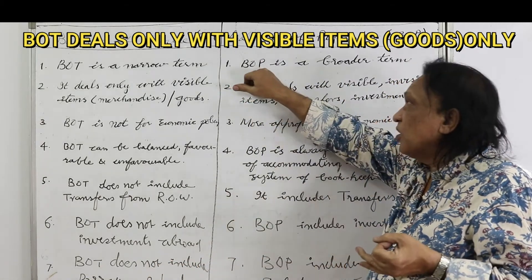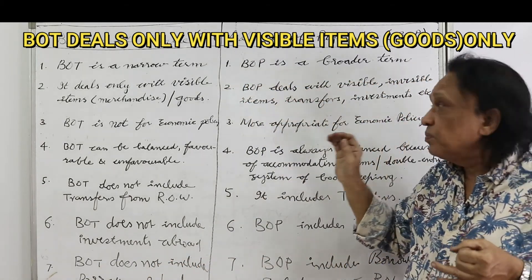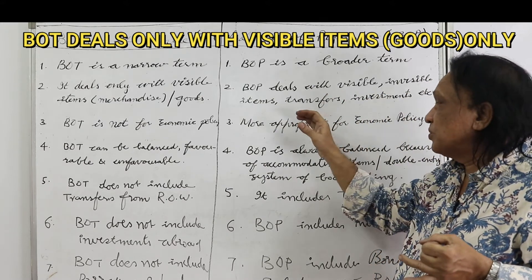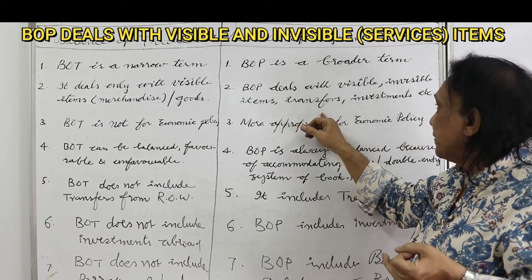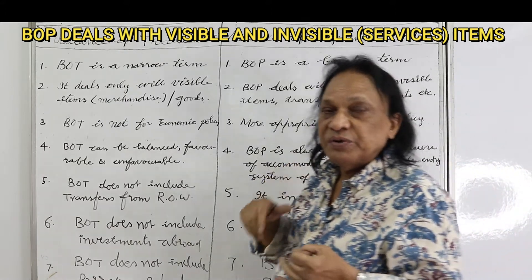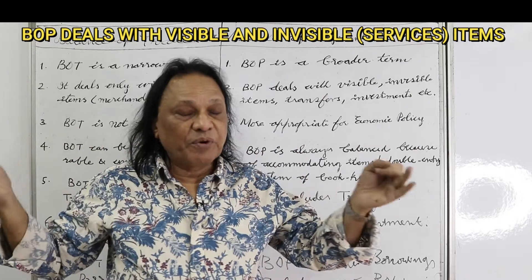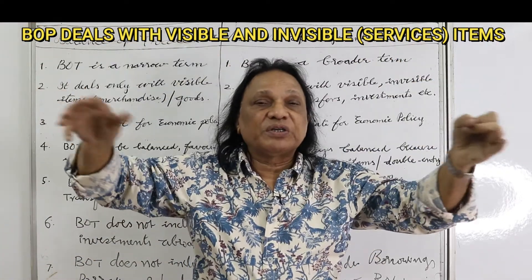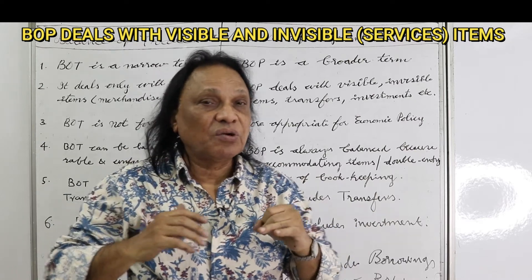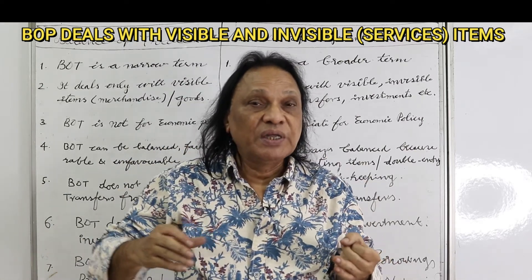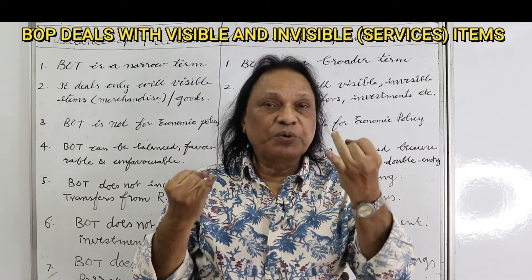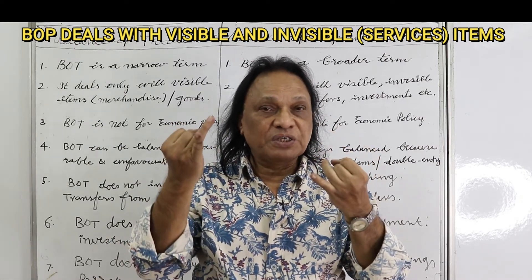BOT is a narrow term because it deals only with the exports and imports of only visible items, visible transactions, goods. And why do we call BOP a broader term? Because BOP deals with visible items, invisible items, transfer payments, investments, and more. Balance of payment is a broader term because it includes all economic transactions a country has with the rest of the world — it can be in terms of exports of goods, import of goods, and export of services.